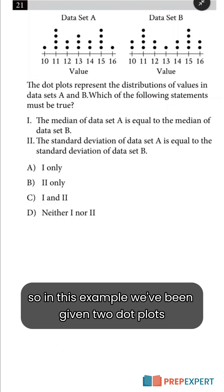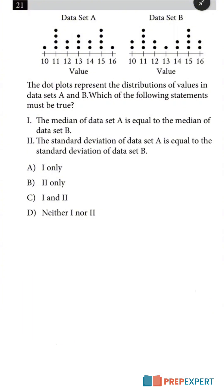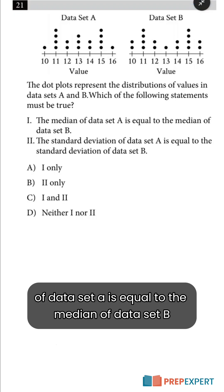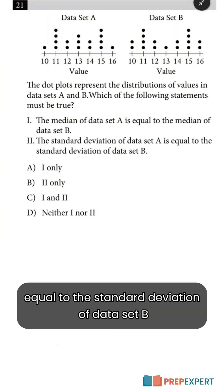In this example we've been given two dot plots which represent the distributions of values in data sets A and B, and we're asked to figure out which of the statements must be true. Statement 1 says that the median of data set A is equal to the median of data set B, and statement 2 says that the standard deviation of data set A is equal to the standard deviation of data set B.